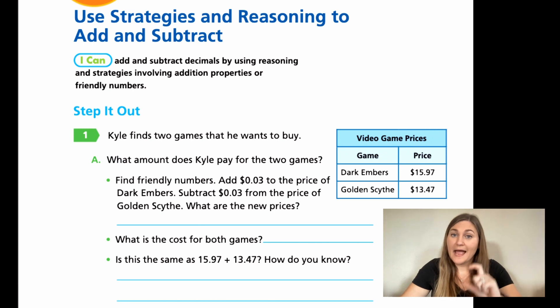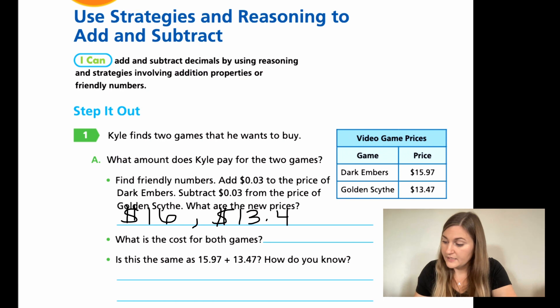So if you're going to add 3 cents to one of them, that means you have to subtract 3 cents from the other. You have to balance it out. So it's almost like you're taking 3 cents from the second game and giving it to the first one. So it says subtract 3 cents from the price of Golden Scythe. What are the new prices? So for Dark Embers, if I gave it 3 cents, it's going to be $16. Then if I took away 3 cents from the second one, if I took away 3 cents from 7, that's going to leave me at 4. So it's going to be $13.44.